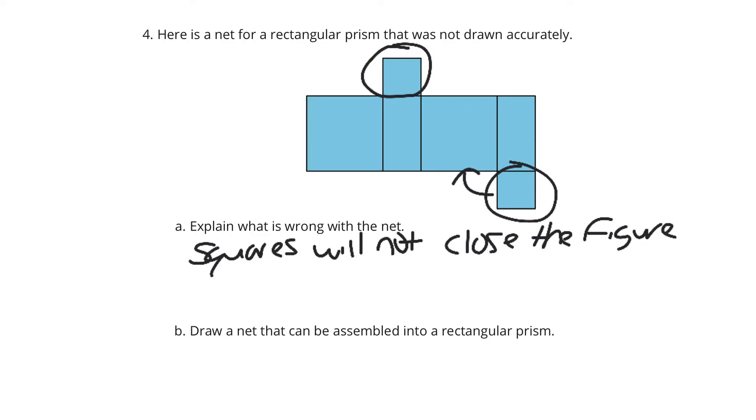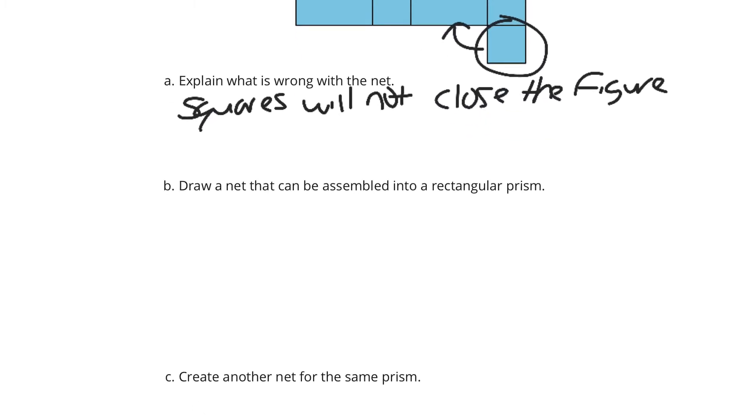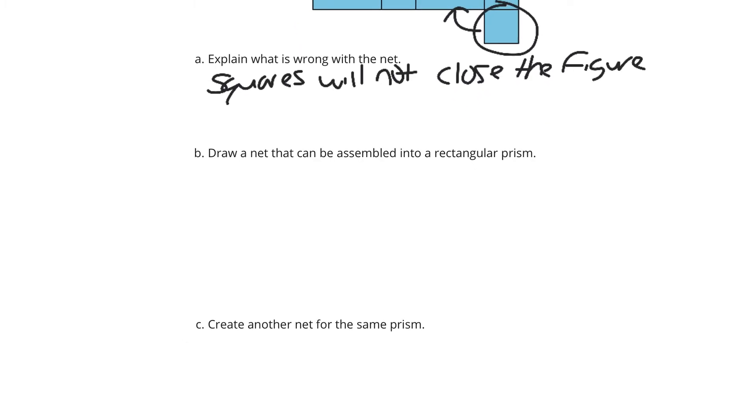And then draw a net that can be assembled into a rectangular prism. Well, we start off with a square. Then I'll draw in a rectangle here. The key with this length coming up here is it has to match as closely as possible, as I'm freehanding this, this length. These two lengths need to be the same because that's what's going to fold up on each other. And then we come down here.